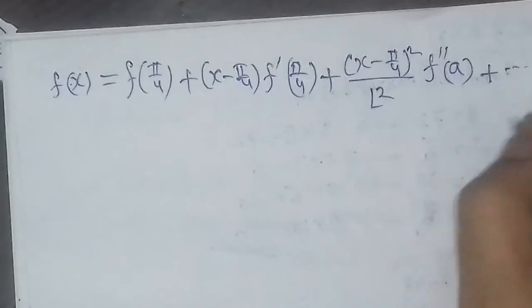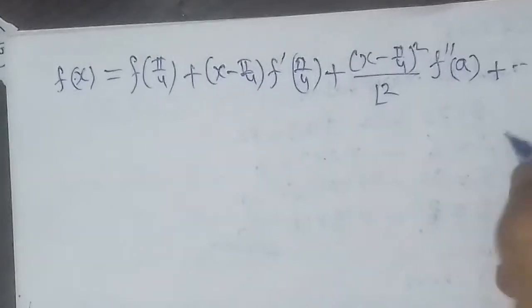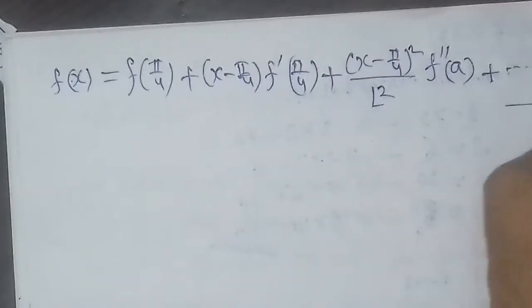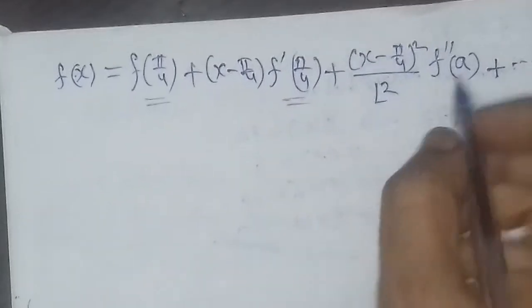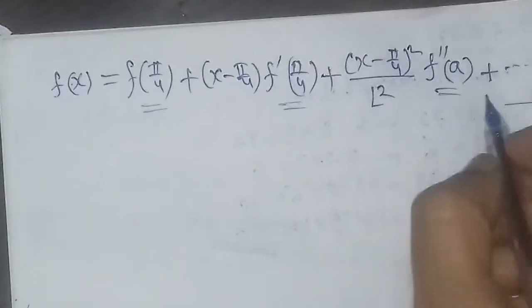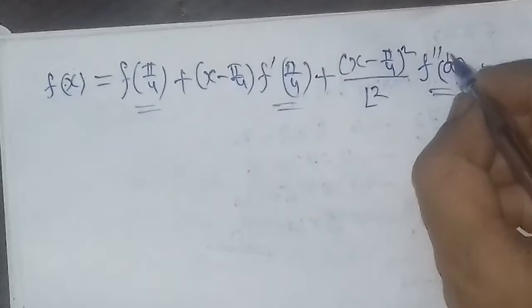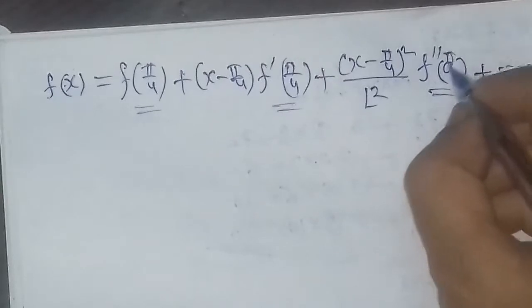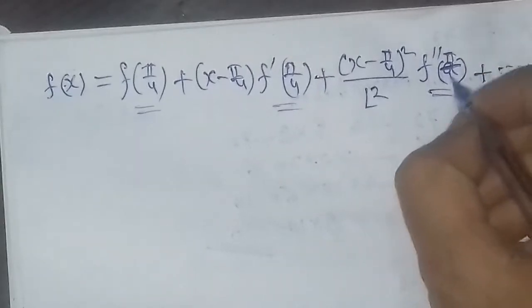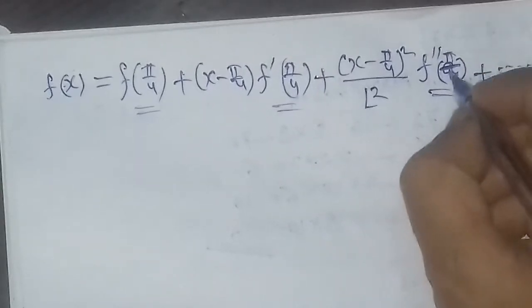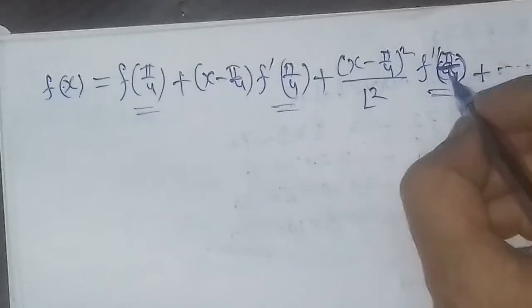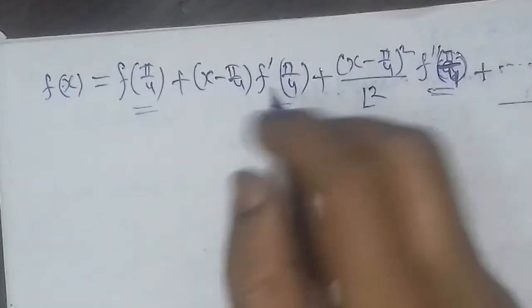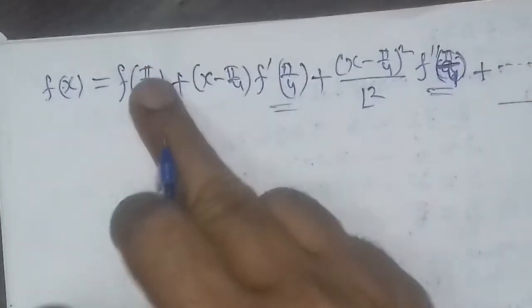Now we will put the values into the formula. Wherever a appears, we write π/4. We have already set this up. So we put in these three values to get the solution.